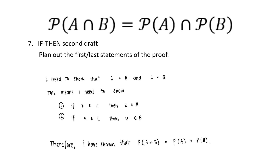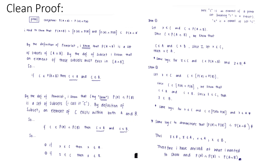I need to show that C is a subset of A and C is a subset of B, meaning I need to show that an element that exists within C also exists within set A and set B. Therefore, I will have shown that the power set of A intersect B equals the power set of A intersect the power set of B. In my clean proof, I first lay out my conjecture, then state my if-then statement and what I need to show: that the power set of A intersect B is a subset of the power set of A intersect the power set of B, and that the power set of A intersect the power set of B is a subset of the power set of A intersect B.